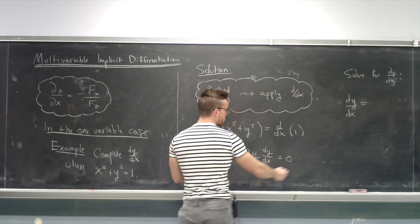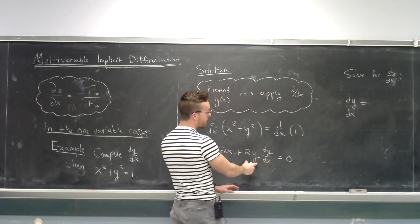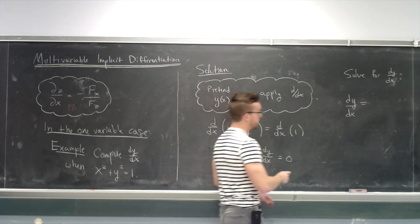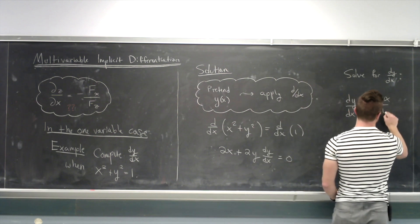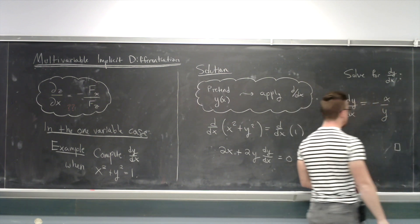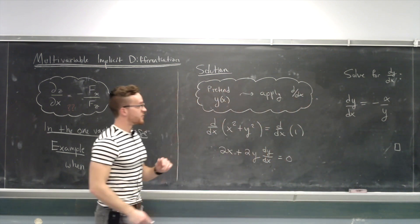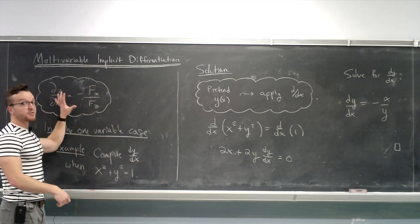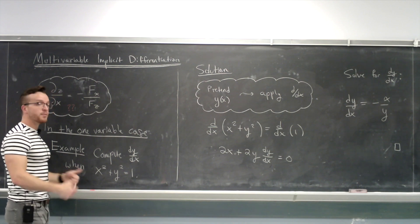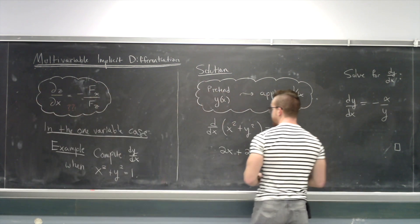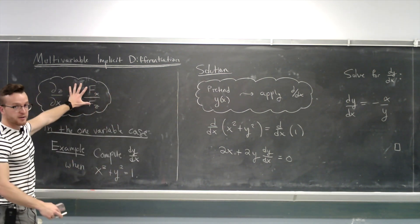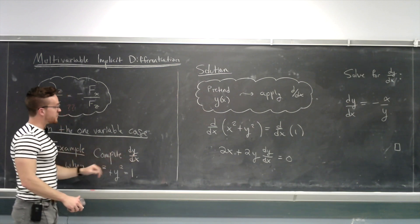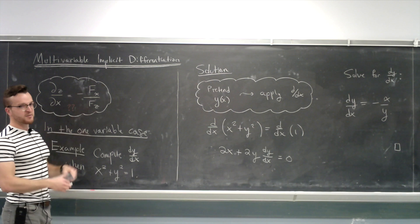This was the quantity we wanted to find, so we just do algebra and solve for it. If I move the 2x over and divide by 2y, the 2's cancel out and we get that dy/dx is negative x over y. And that is implicit differentiation in single variable calculus. I claim it works exactly the same way in the multivariable setting. I won't use the formula yet because it's not necessary — it's only there to scare you.